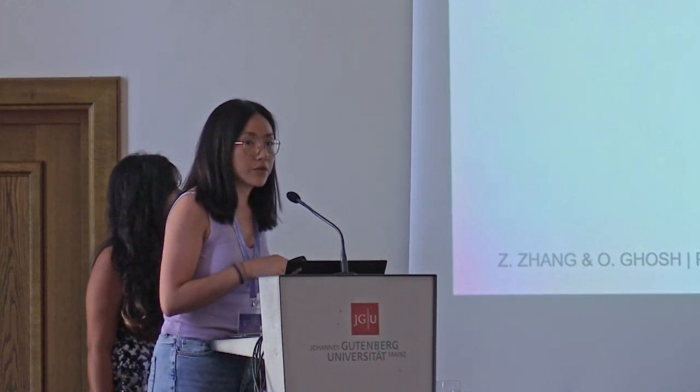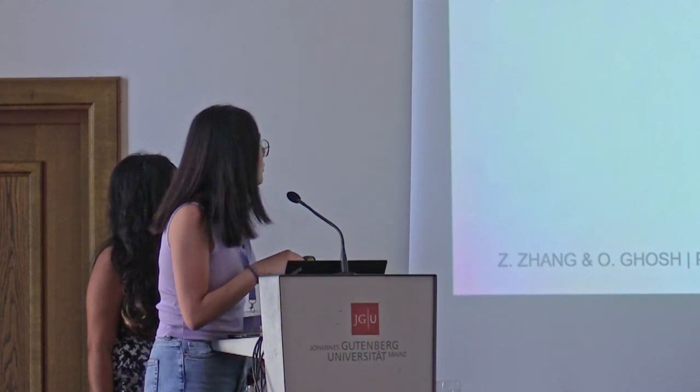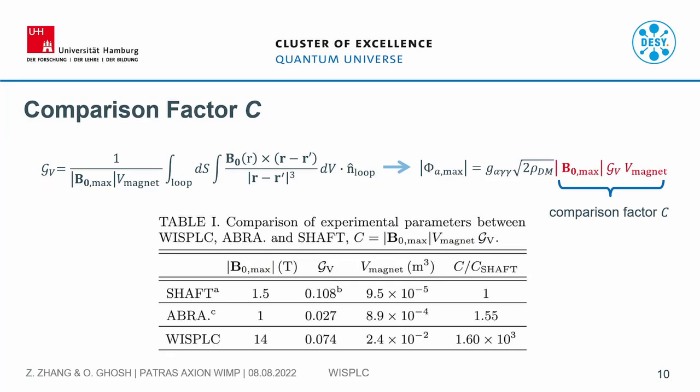We can simplify the equation for the flux by summarizing the volume integration and the surface loop integration with a form factor — we call it a specific form factor — normalized by the maximum B field and the volume of the magnet. The flux we pick up is described by five parameters: the first two are axion properties, and the last three are experimental parameters — which we call the comparison factor. Comparing with two other axion experiments using toroidal magnets, WISPEL-C is able to capture about three orders of magnitude higher flux.